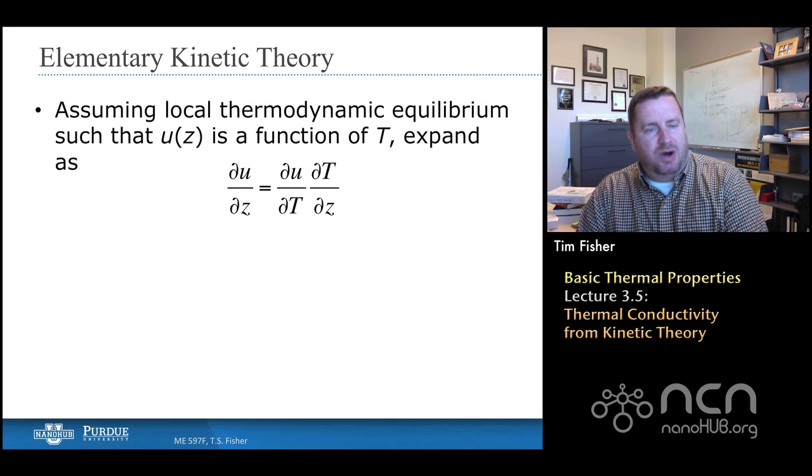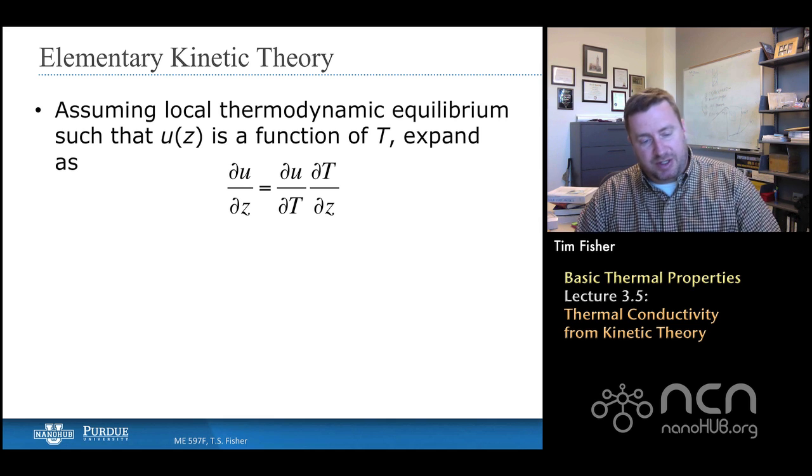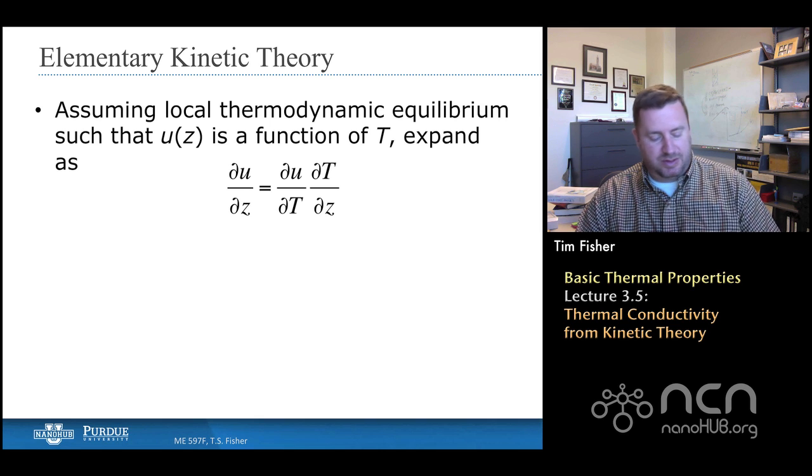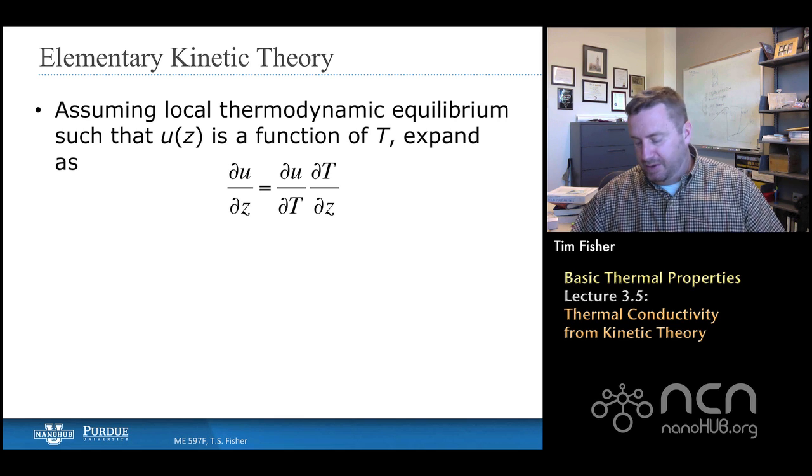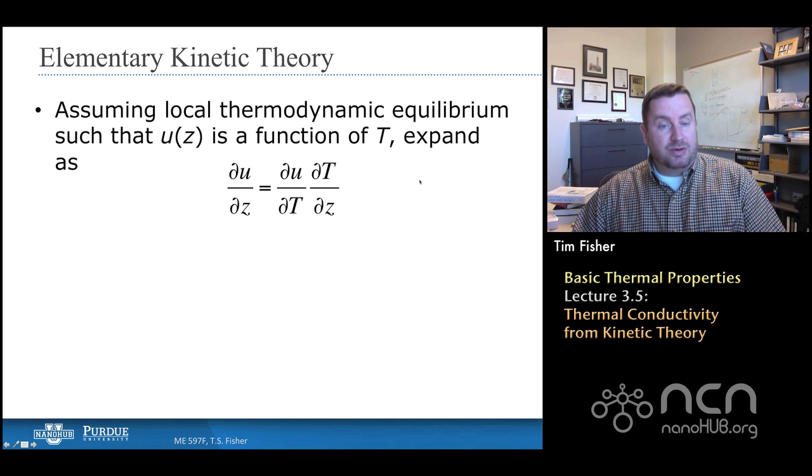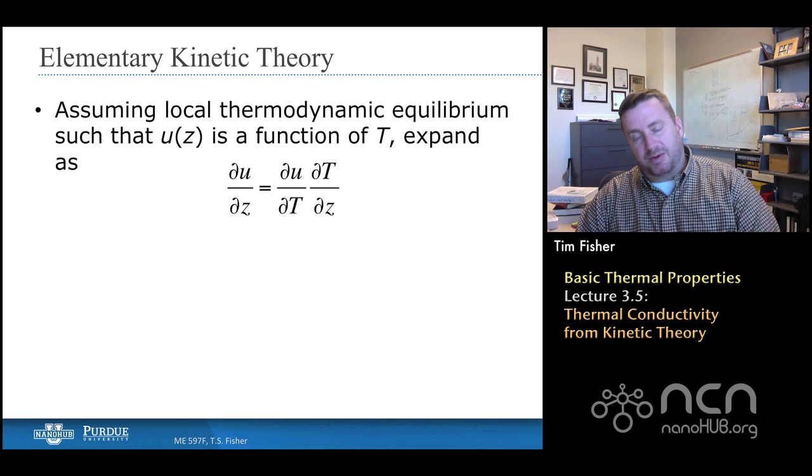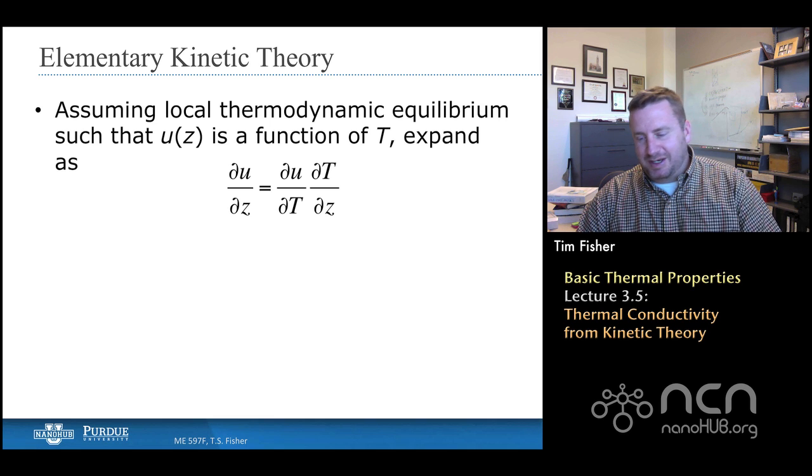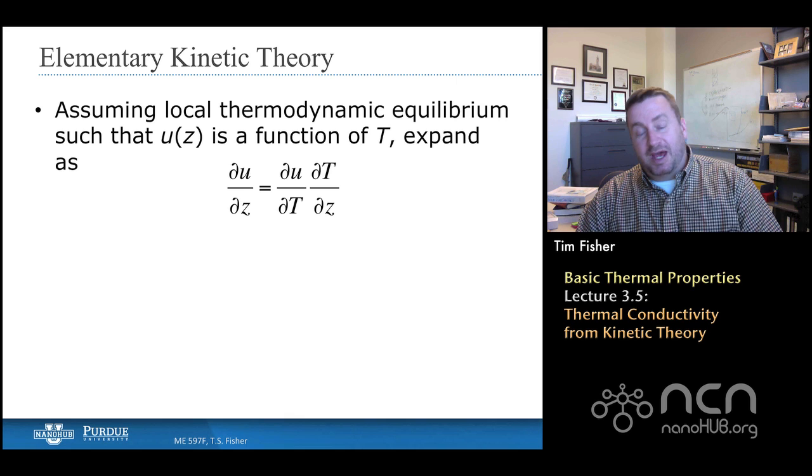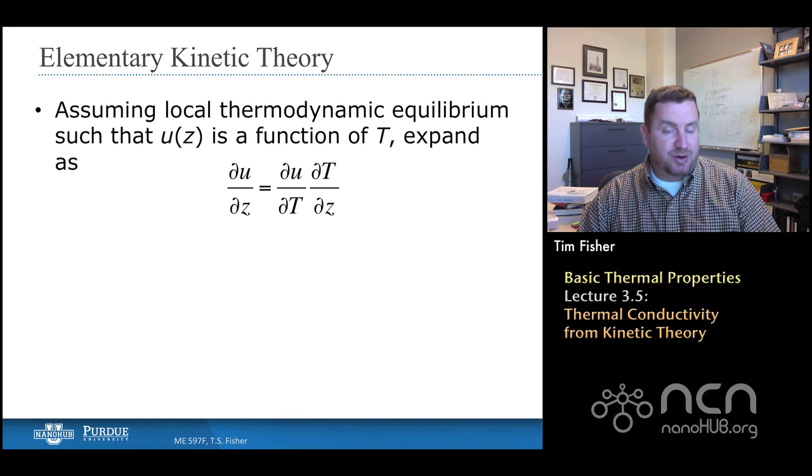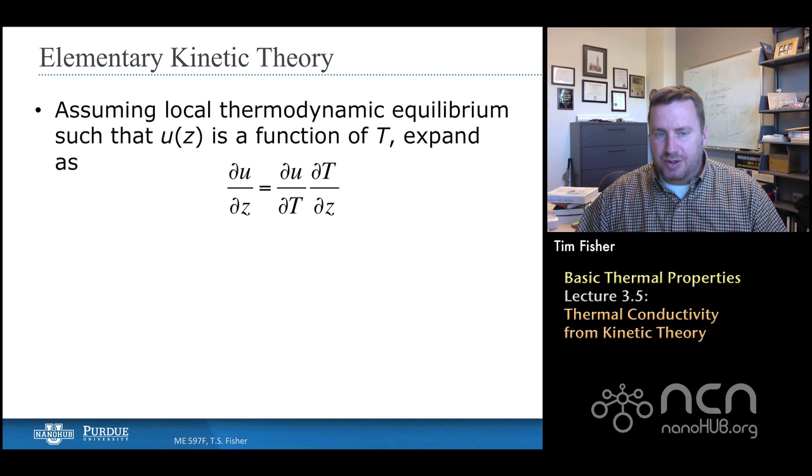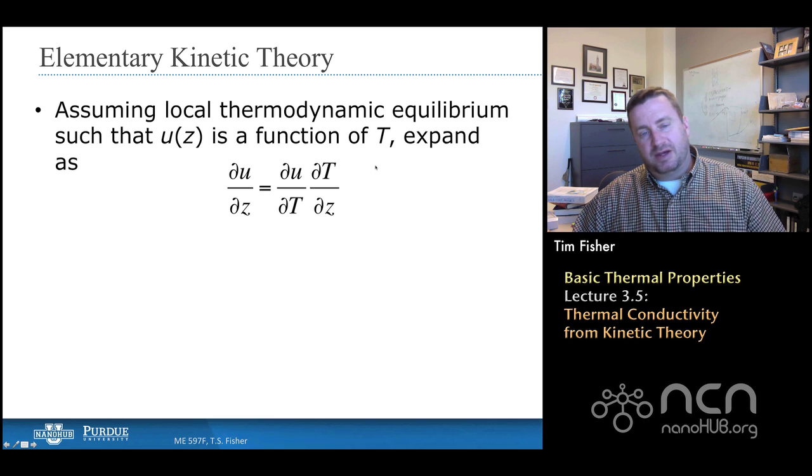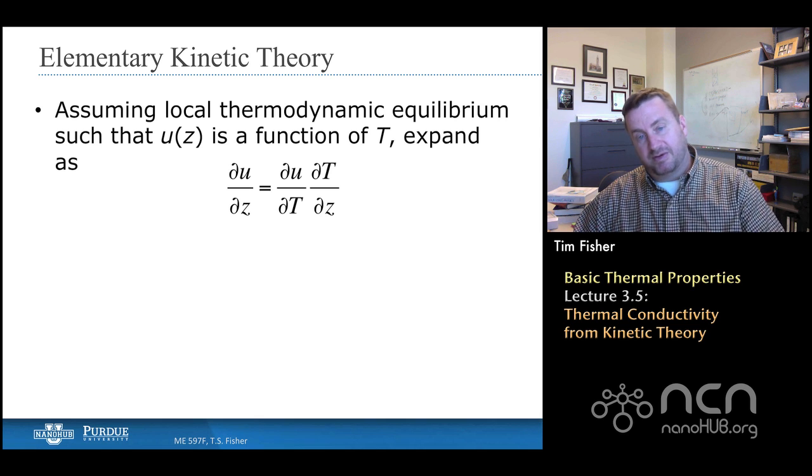If we continue on, recalling that we had an expression for that average heat flux that was a product of velocity, mean free path, and the z gradient of the internal energy, we now see that what we'd really like to do in terms of the thermal property that we're after, which is still thermal conductivity—we haven't mentioned it since the beginning—is to have a temperature gradient, to express the problem in terms of a temperature gradient instead of a z gradient. So we proceed to use the chain rule, simple chain rule, where that z gradient of U is the product of the temperature gradient of U multiplied by the actual temperature derivative with respect to z.